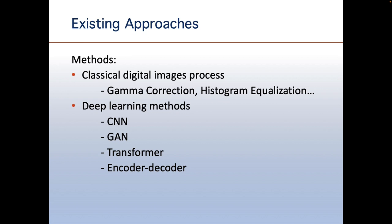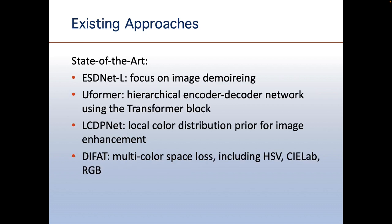We also began to use transformer and encoder-decoder for the image enhancement task. Next, I will introduce some state-of-the-art models used in image enhancement. For example, the ESDNet-L, which focuses on image demoireing. And Uformer is a new model that hierarchically encodes using decoder networks with the Transformer block. And also the LCDPNet, which focuses on local color distribution prior for image enhancement. And also some new models like DIFAT. It uses multi-color space loss, including HSV, CIELab, and RGB.